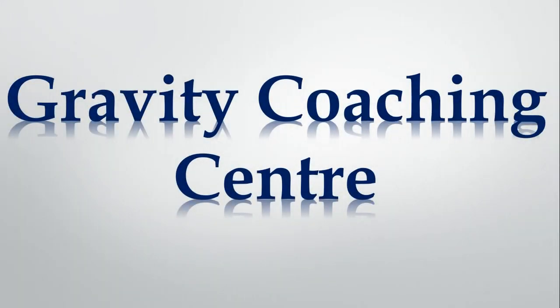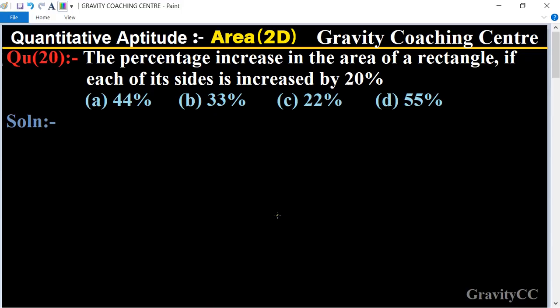Welcome to our channel Gravity Coaching Center. Quantitative Aptitude chapter Area, question number 20: The percentage increase in the area of a rectangle if each of its sides is increased by 20%. Let the original length and breadth of the rectangle be x and y.